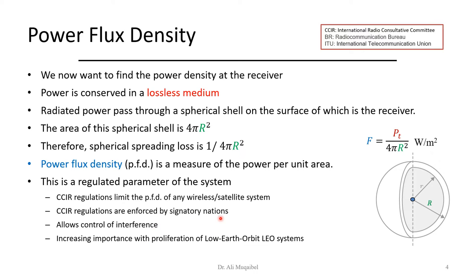Enforcement is by the signatory nations that have signed the CCIR agreement and must respect it. This also tells you that when you buy a mobile phone the power that comes from the mobile has to respect a certain threshold to make sure you don't get power over your body exceeding that limit. This allows for controlling interference and is especially important for satellite systems, particularly low orbit satellites, because they are close to the earth and the signal received will be relatively high.